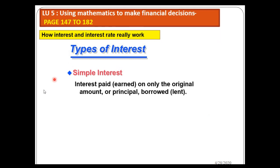Simple interest is the interest on only the original amount. When you invest money, that money is called the principal or the present value. When we calculate simple interest, our interest is based on the original amount. For example, if I invested ten thousand at ten percent, my ten percent will be based on ten thousand in year one, year two, year three — it doesn't change; it is fixed on that particular amount.